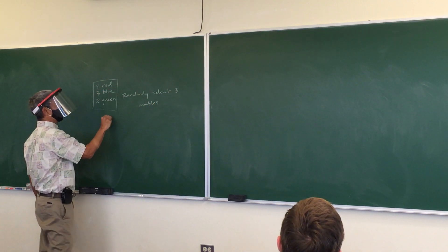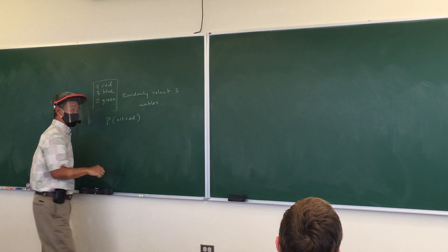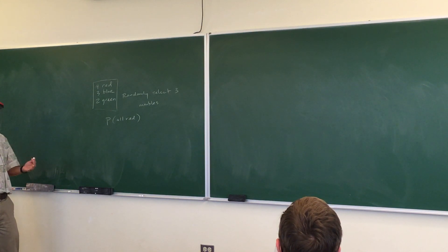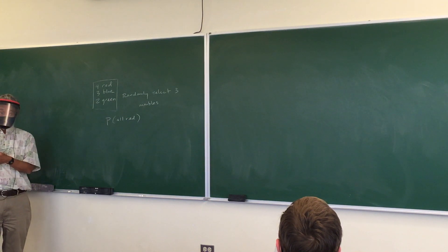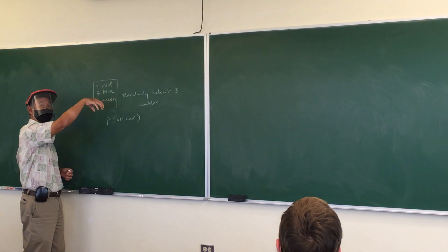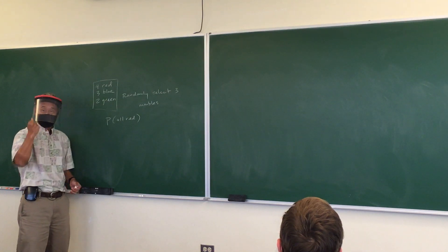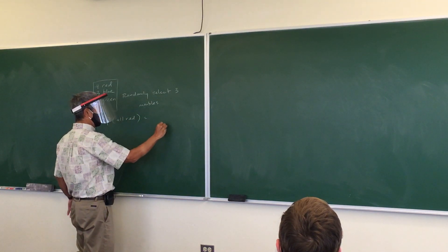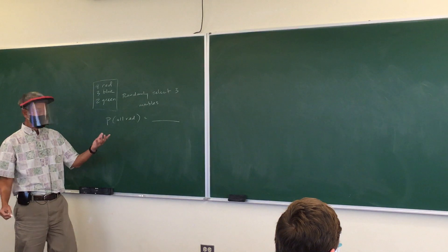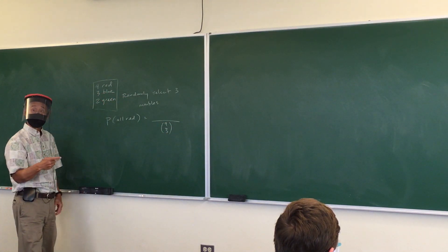What is the probability that they're all red? Now there are two ways you can do it — think about it as a combination, or as a permutation. If you think of it as a combination, you just reach into the box and pull out all three balls at once. There's no order. So the denominator is: out of nine balls, how many ways can I select three? Nine choose three. This is a combination.